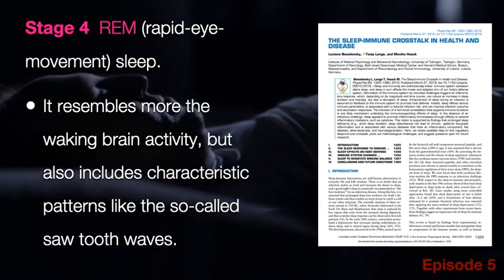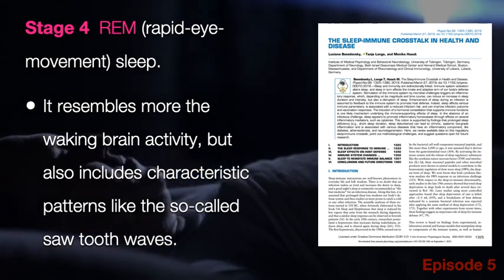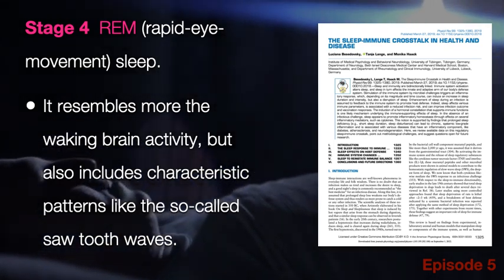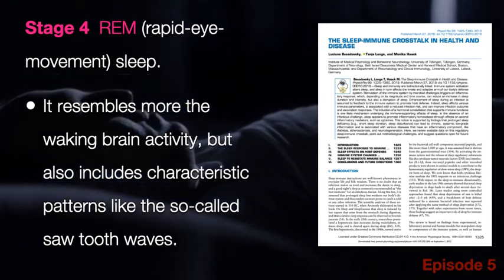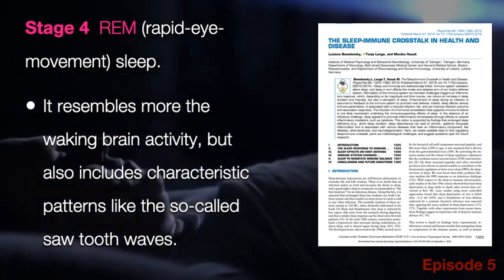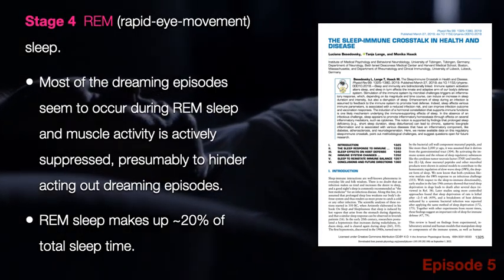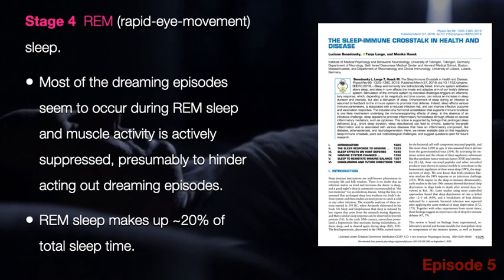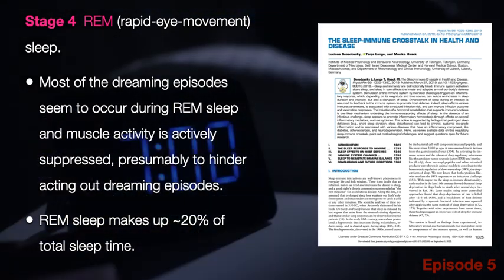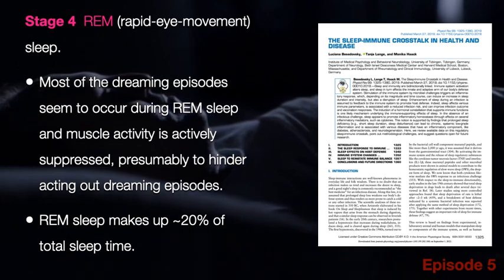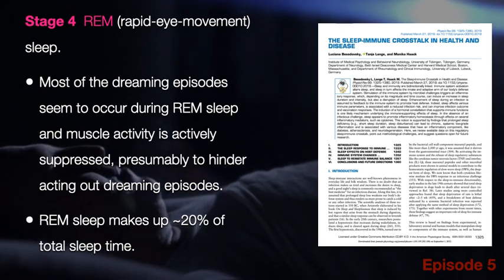Stage 4 REM sleep resembles more the waking brain activity, but also includes characteristic patterns like the so-called saw-tooth waves. Most of the dreaming episodes seem to occur during REM sleep, and muscle activity is actively suppressed, presumably to hinder acting out dreaming episodes.